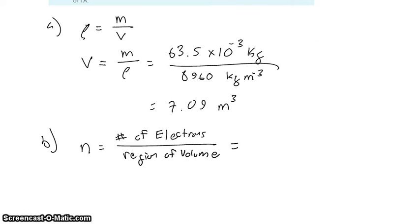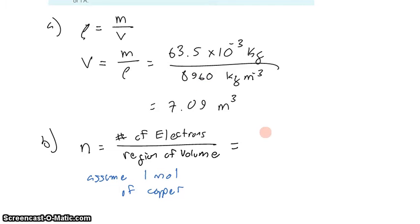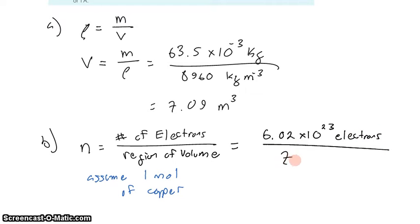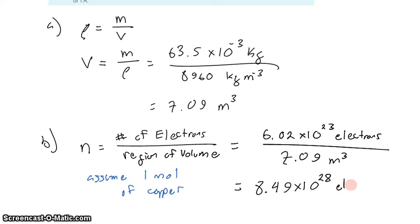So what we'll do is assume one mole of copper. It doesn't really matter how much copper we assume because we're looking for the density and that should be independent of the amount. There are going to be 6.02 times 10 to the 23rd free electrons, and the copper will occupy a space of 7.09 times 10 to the negative 6 cubic meters. Running that calculation gives us 8.49 times 10 to the 28 electrons per cubic meter.